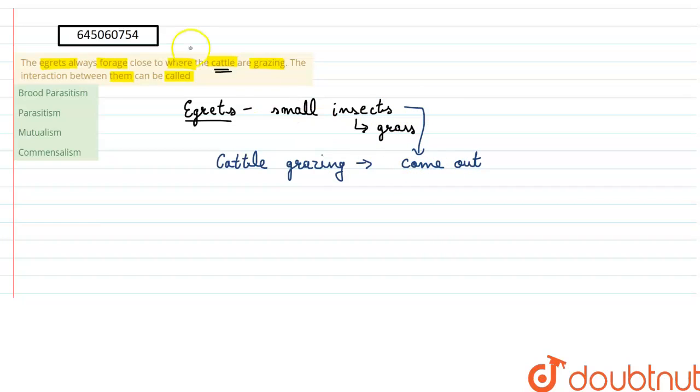Then these egrets are benefited that they are easily able to feed on the insects. They can easily feed on the insects which come out of the grass because of cattle grazing. So in this relation we can say that